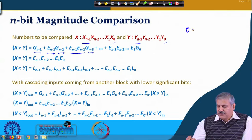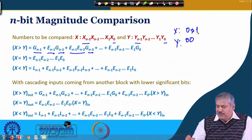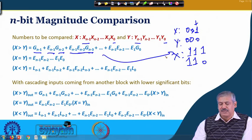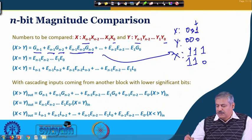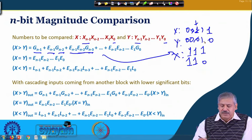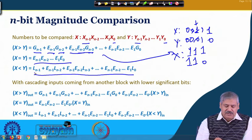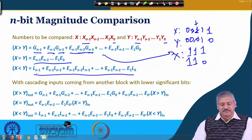For example, if both most significant bits are 00 or 11 (equal), we look at the next position to determine if x is greater. If those are also equal, we look at the next, and so on. The x equal to y and x less than y outputs follow the same cascaded logic structure.